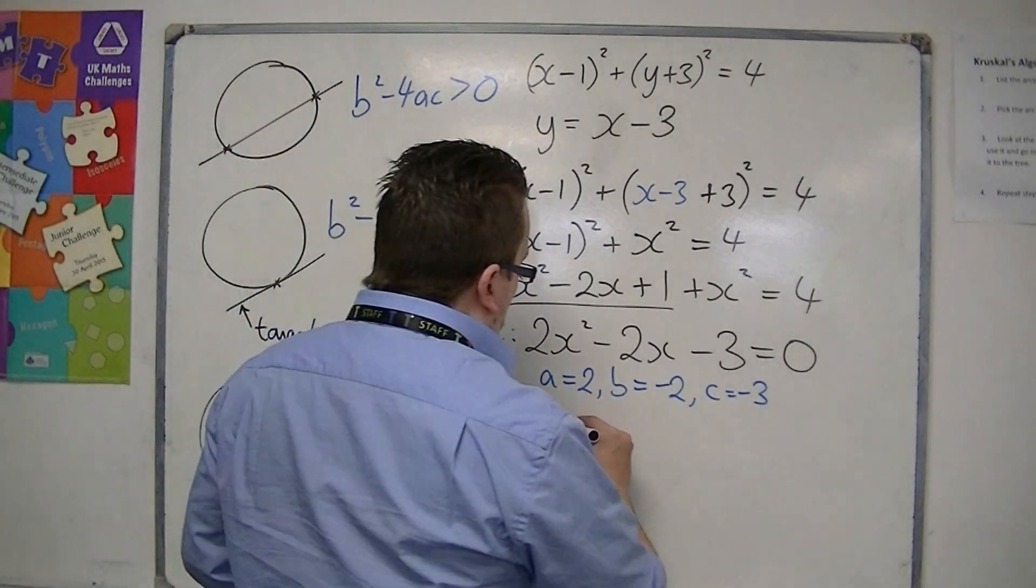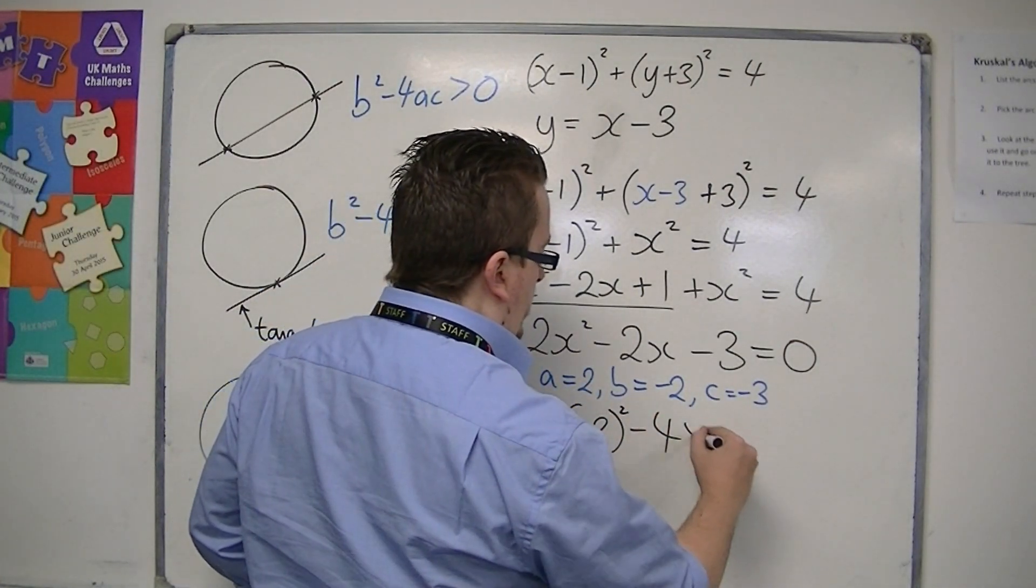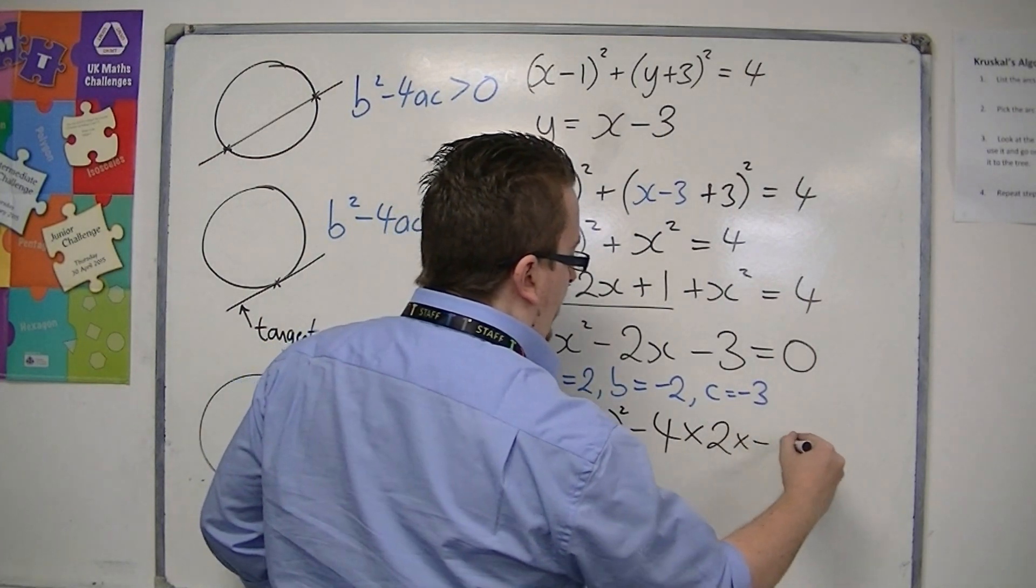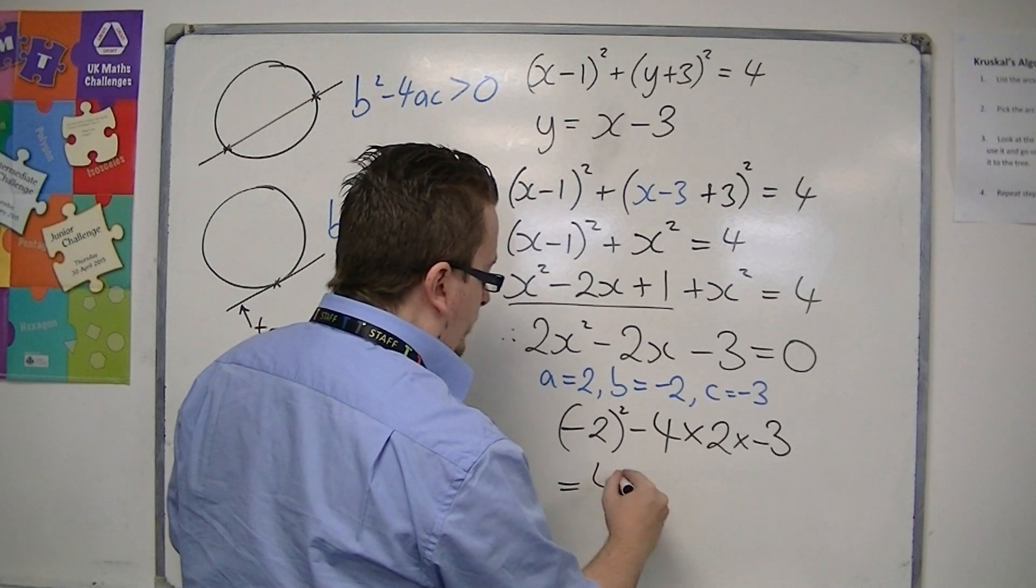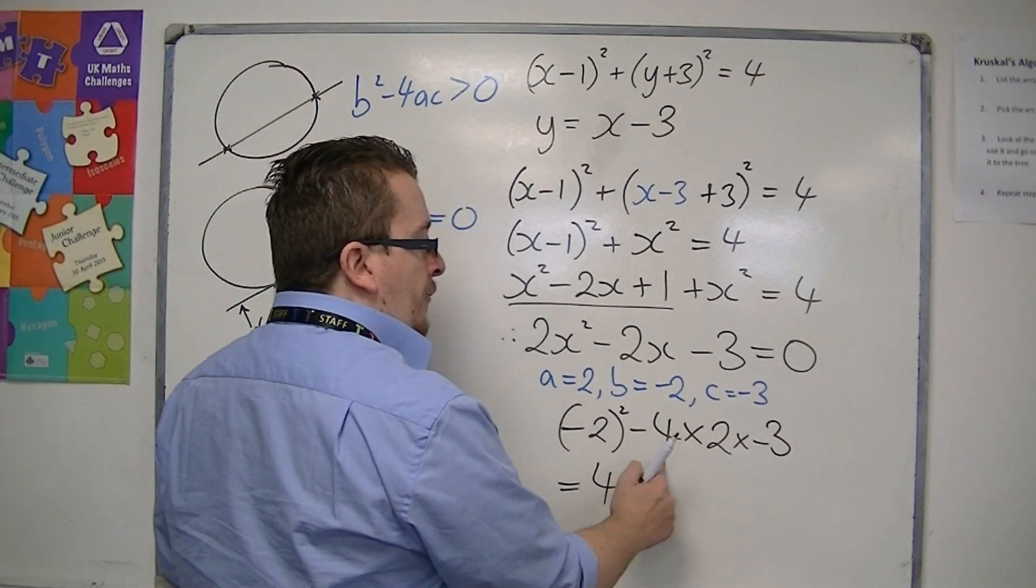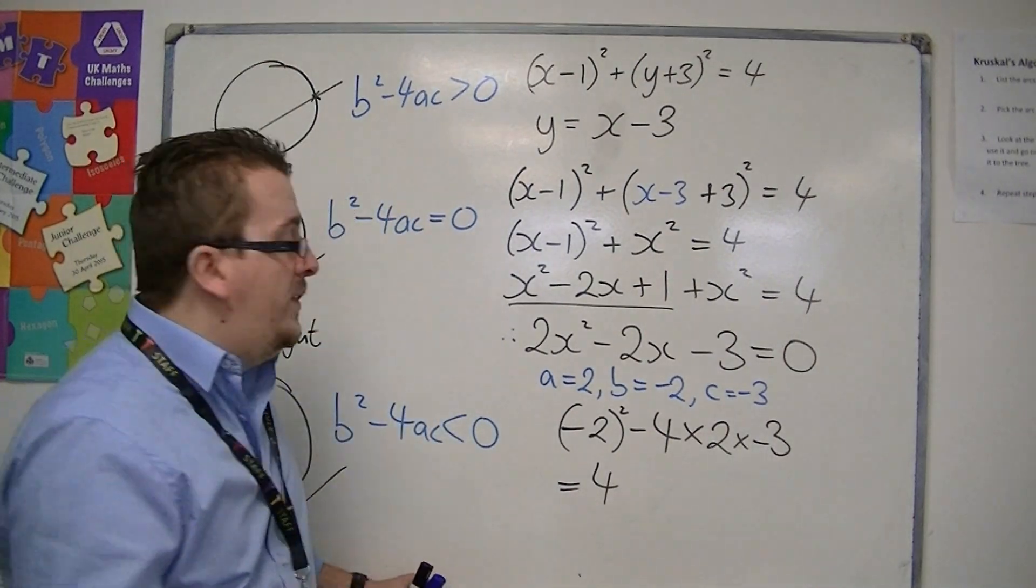So we get b squared, minus four, times a, times c. So this is four. Minus four times two is minus eight, times minus three is plus twenty-four.